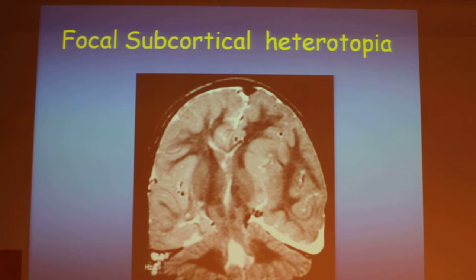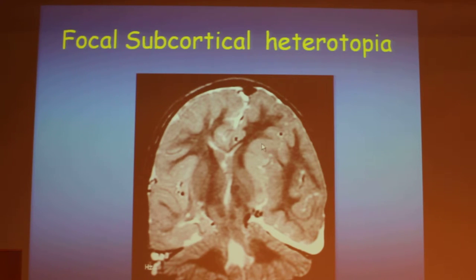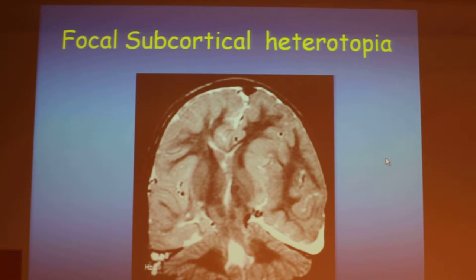However, sometimes they actually look like a mass. This ectopic gray matter even causes a mass effect on the ventricle and the folds. And again, what we have to do is prove to ourselves that this is gray matter in all sequences.